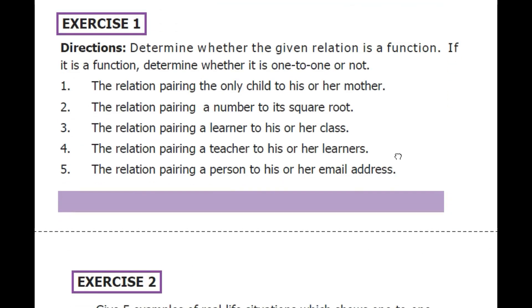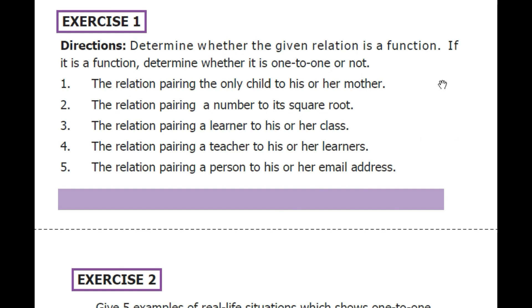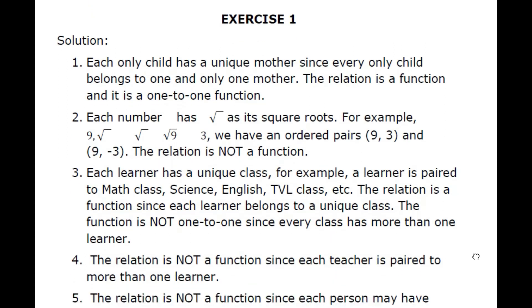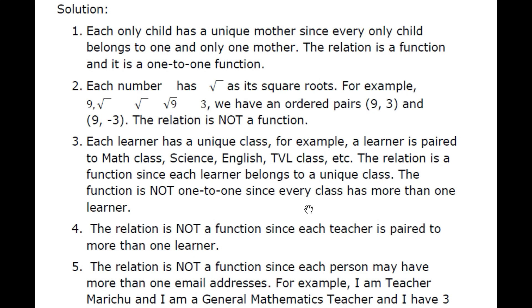Exercise 1: Determine whether the given relation is a function. If it is, determine further whether it is one-to-one or not. Number 1: The relation pairing the only child to his or her mother. Each only child has a unique mother since every only child belongs to one and only one mother. Therefore, the relation is a function, and it is one-to-one because no two only children belong to a single mother.